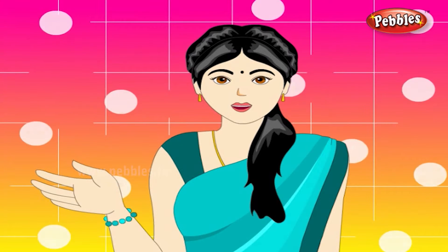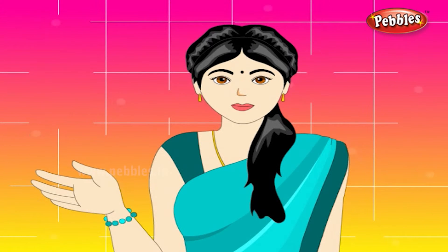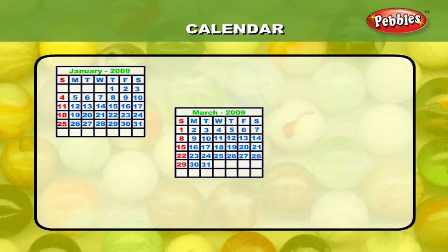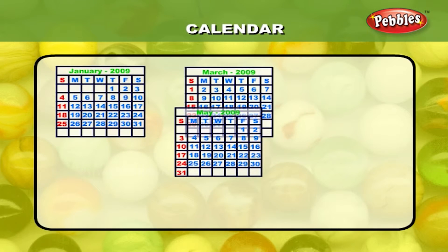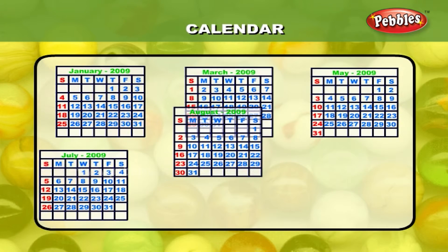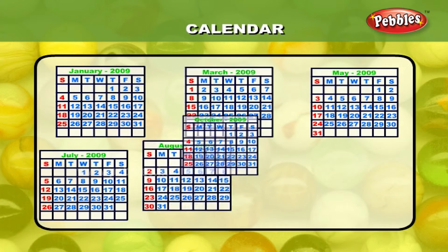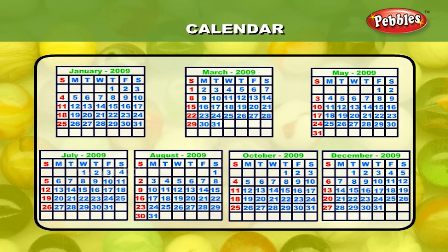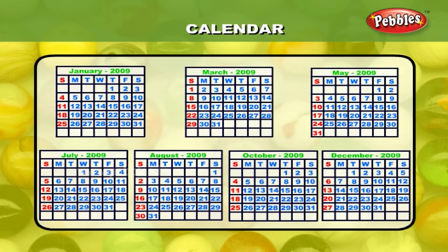All the months do not have the same counting of days. January, March, May, July, August, October and December have 31 days a month.